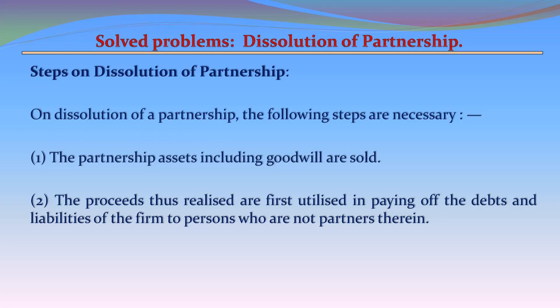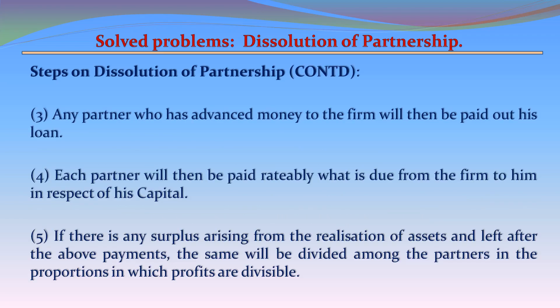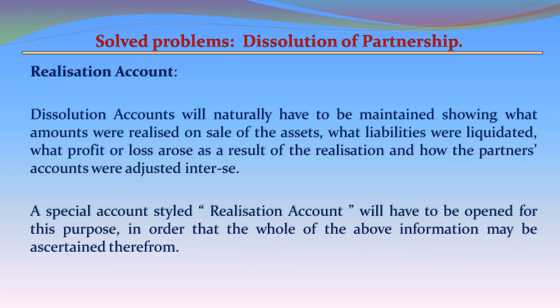Step 1: The partnership assets including goodwill are sold. Step 2: The proceeds realized are first utilized in paying off the debts and liabilities of the firm to persons who are not partners. Step 3: Any partner who has advanced money to the firm will then be paid out his loan. Step 4: Each partner will be paid rateably what is due in respect of his capital. Step 5: If there is any surplus after the above payments, it will be divided among the partners in the proportions in which profits are divisible.